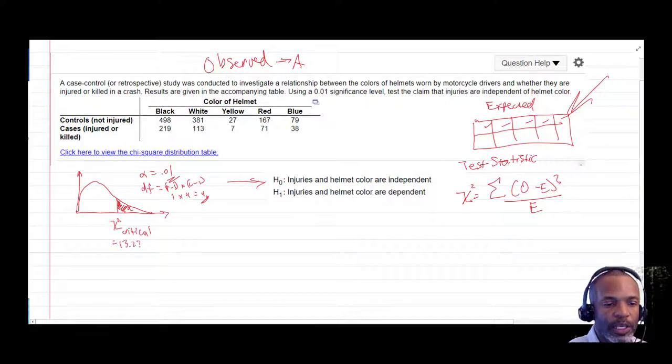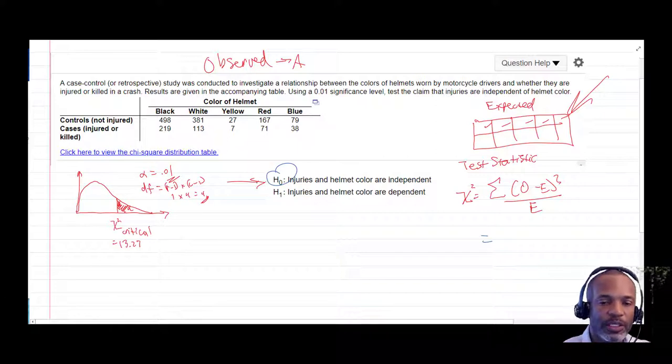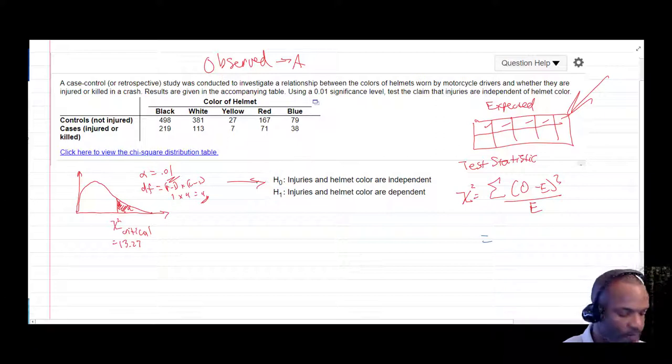So the only thing left is to go ahead and calculate our test statistic using our calculator to see if we fall into the rejection region, by which, at which point we would then reject the assumption of independence. So let's see where we are. I'll punch those into the calculator.